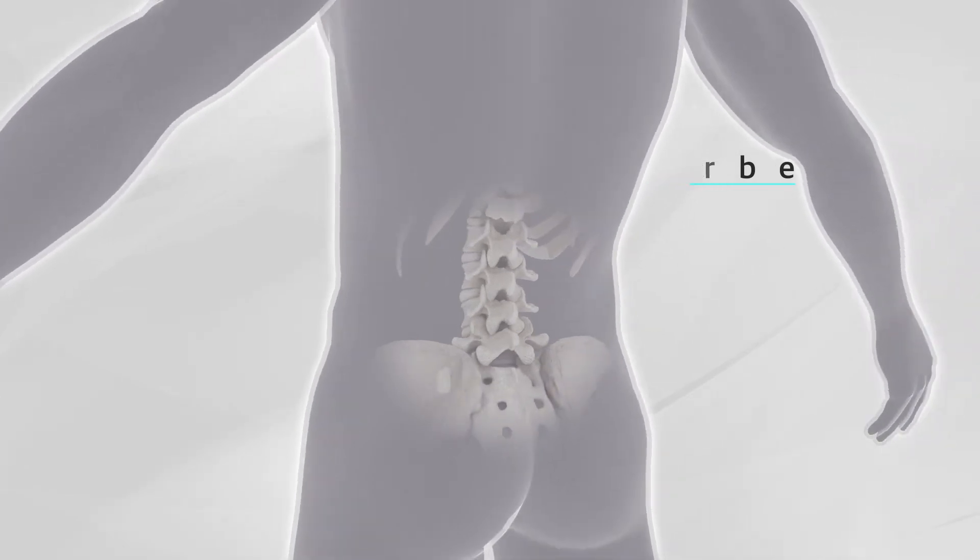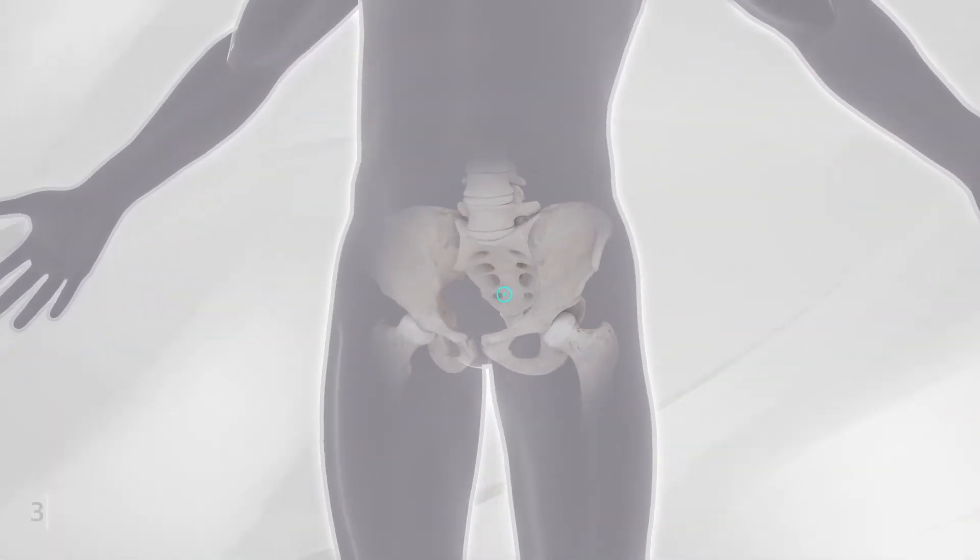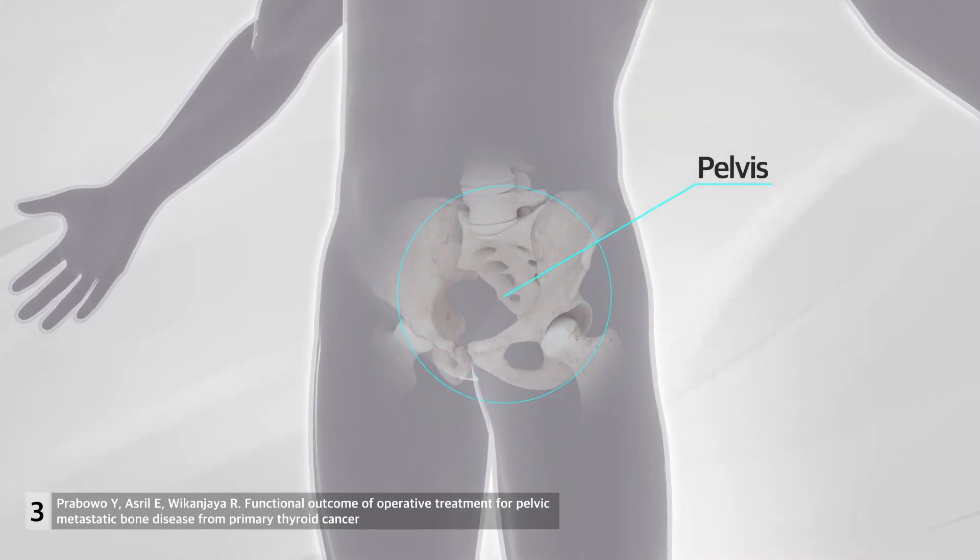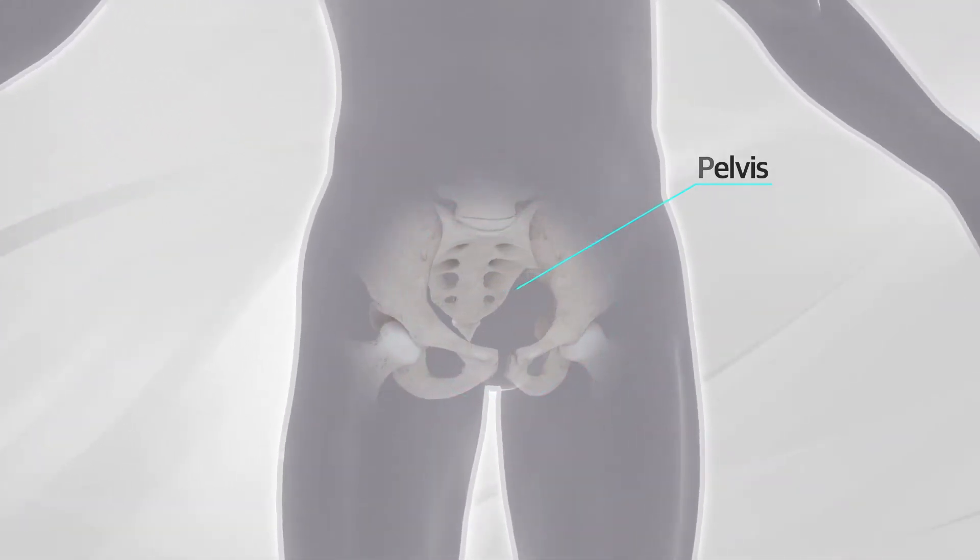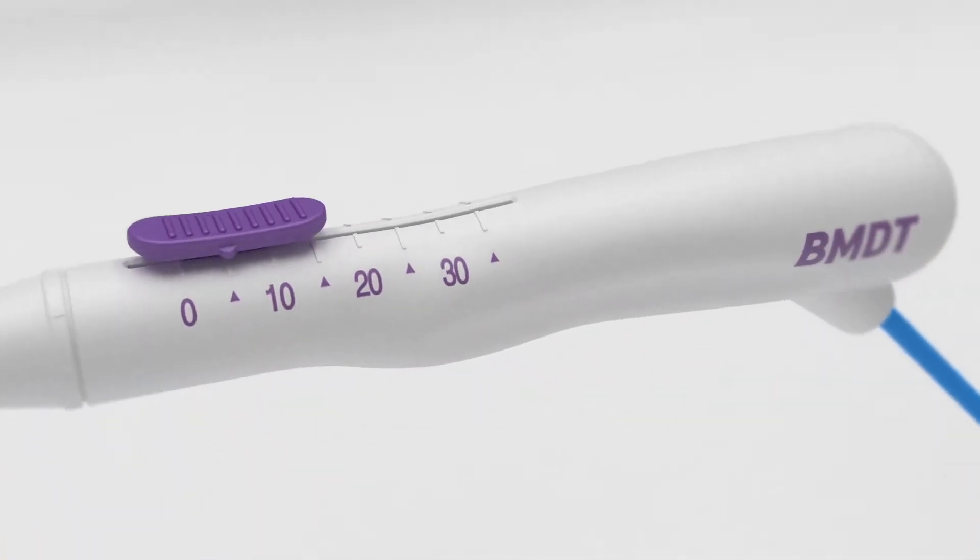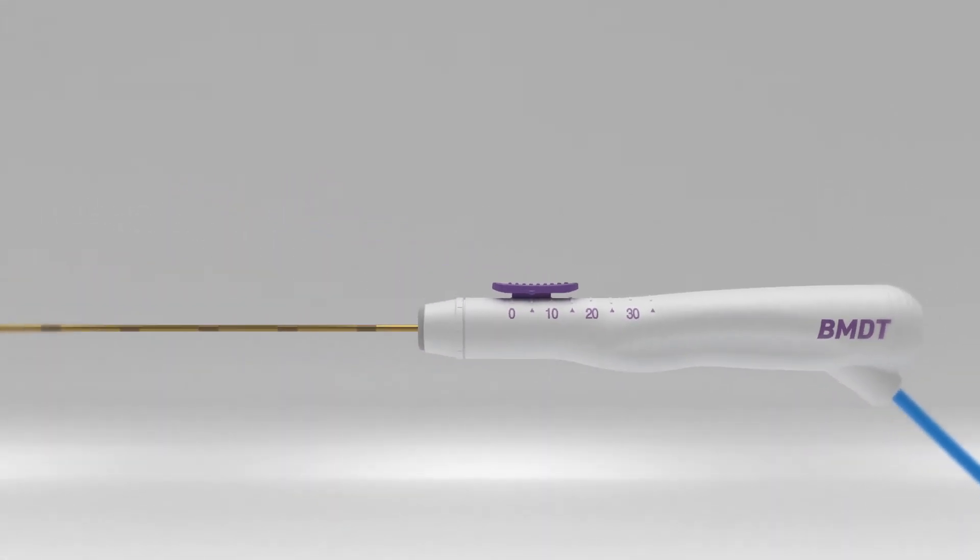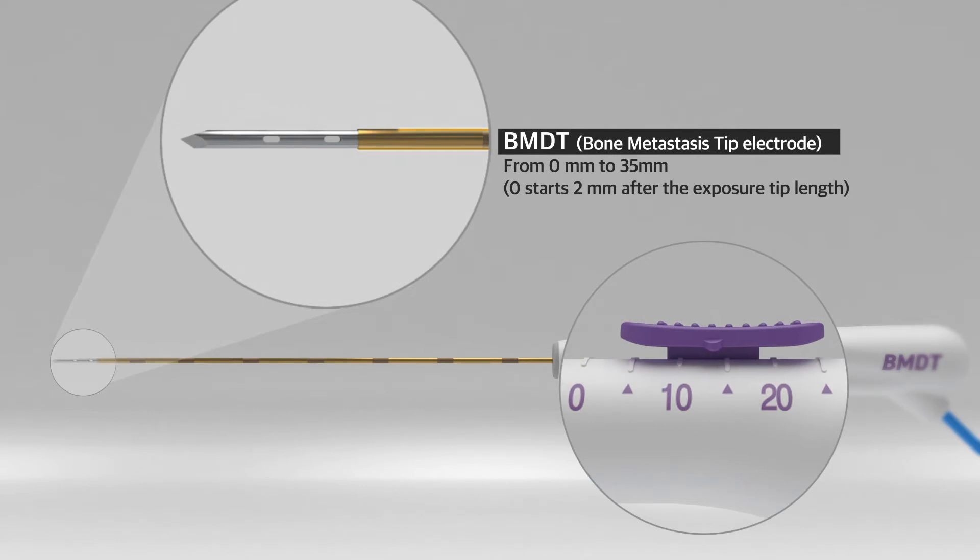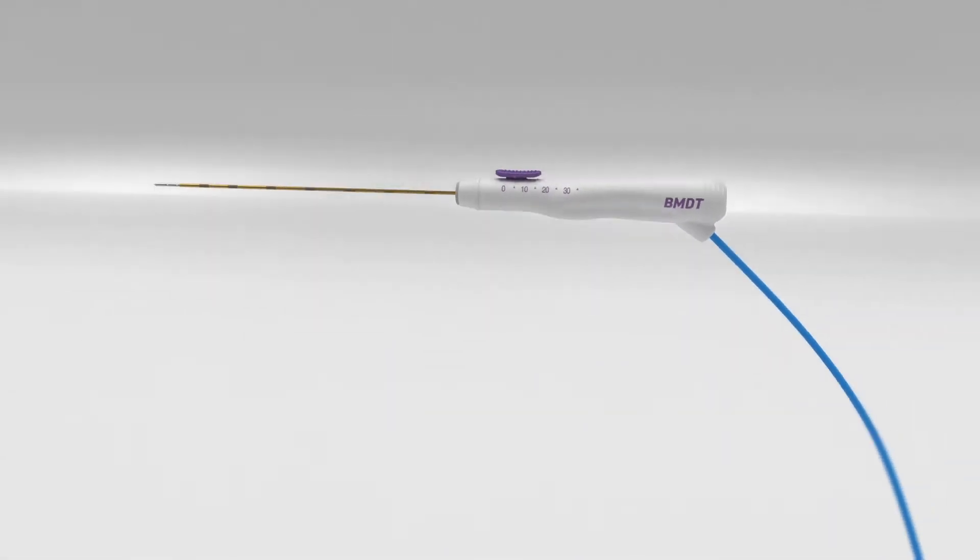Pelvis is the second most common location for bone metastases, followed by hip and femur. RF Medical's bone metastases dual thermocouple (BMDT) electrode is specialized for spinal bone metastases RF monopolar ablation.